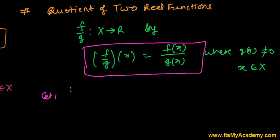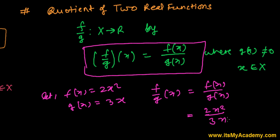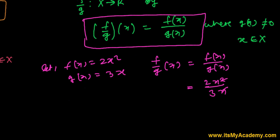It will be clearer if we look at an example. Let f(x) = 2x² and g(x) = 3x. We want to find (f/g)(x), which equals f(x) divided by g(x). That's 2x² divided by 3x; the x cancels, giving us (f/g)(x) = (2/3)x.